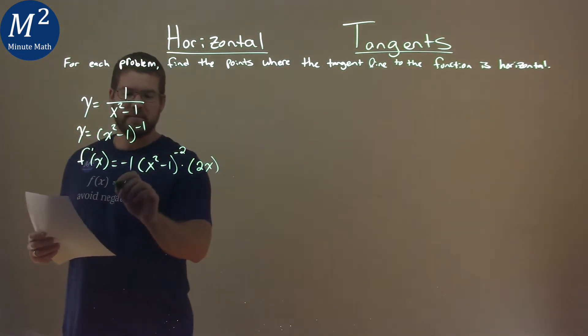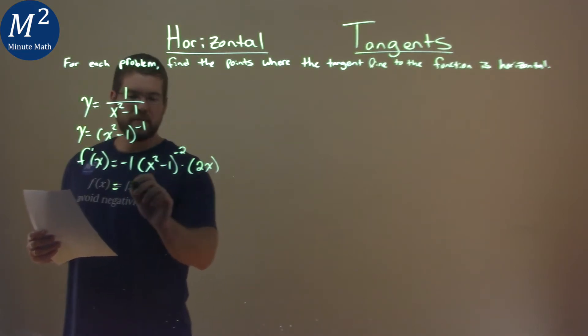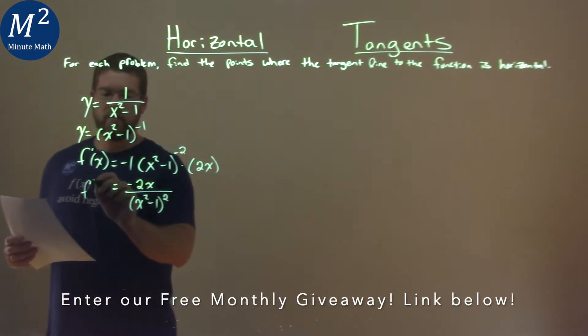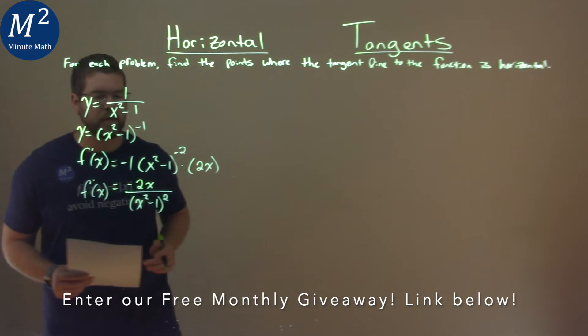All right, simplifying this, negative 1 times 2x is negative 2x over x squared minus 1 to the now positive 2 power in the denominator.